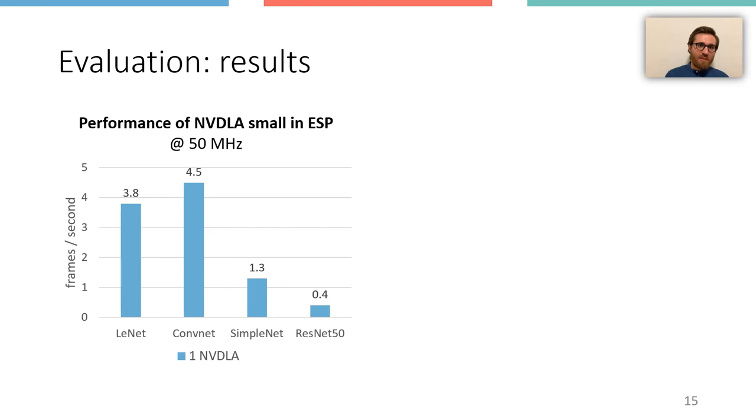Clearly, the performance is limited by the fact that we are running at just 50 MHz and that we are using the small version of NVDLA. NVIDIA reported the frames per second for ResNet50 for an ASIC implementation of the NVDLA small running at a clock frequency of 1 GHz. The comparison with our results indicates a slowdown of 18x, which is aligned to the 20x gap in clock frequency between this ASIC and our FPGA implementation.